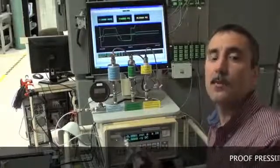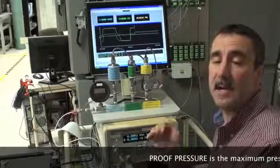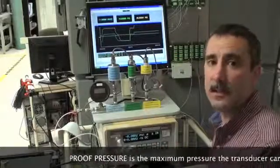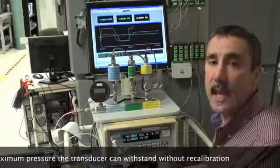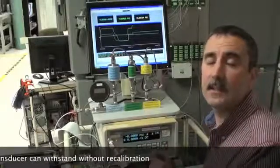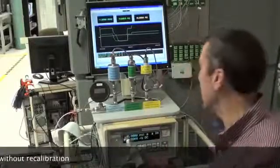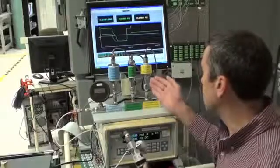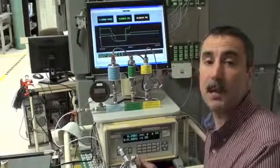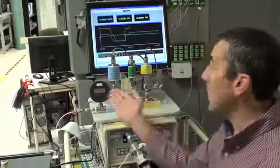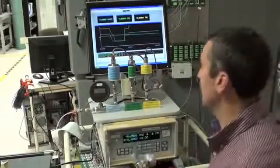Where again it's proof pressure. Proof pressure is the maximum pressure that you can subject the device to without it needing to be recalibrated. So it's not significantly affecting its accuracy. Where proof pressure rating on this typical transducer may be 2 times its full scale or 3 times at best its full scale. These offer much higher proof pressure ratings.